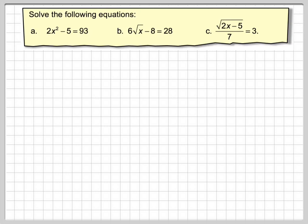We've got to solve the following equations: 2x squared minus 5 equals 93; 6 root x minus 8 equals 28; and the square root of 2x minus 5 over 7 equals 3.